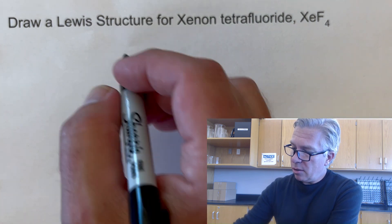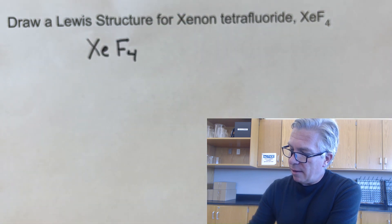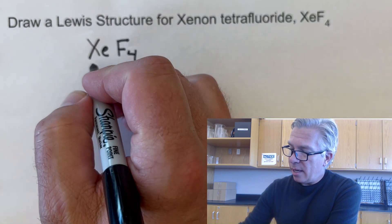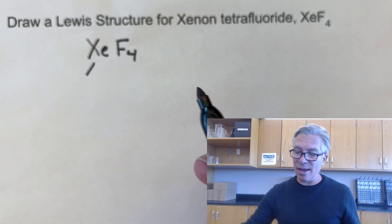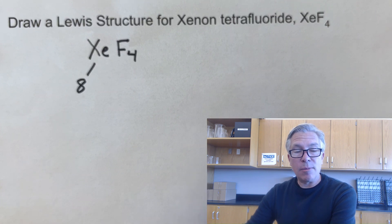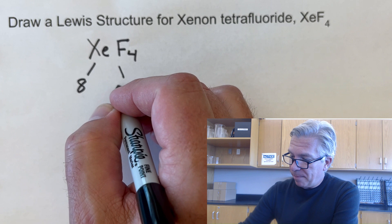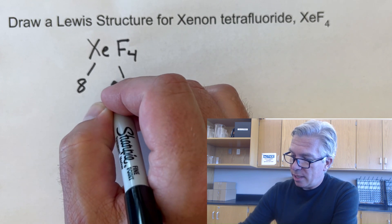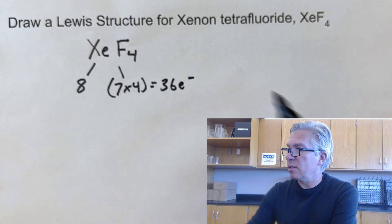So we're going to go and do the same exact set of steps. XeF4 is our molecule. And the only difference here is that we haven't seen any noble gases. They already have eight valence electrons. So just go ahead and get them eight. They're probably going to end up with more than eight after we bond things to it, but we're going to start with eight. Fluorines have seven each for a total of 28, and that gives me 36 electrons total.